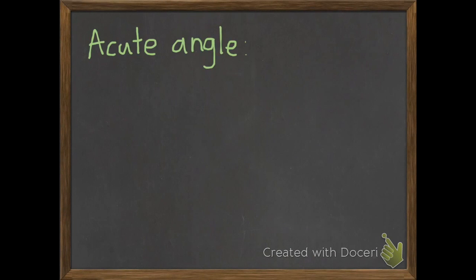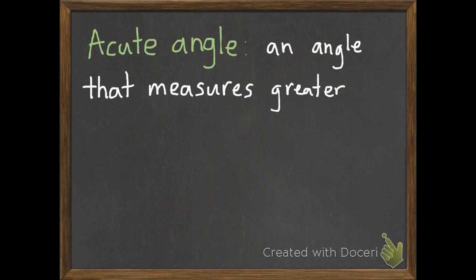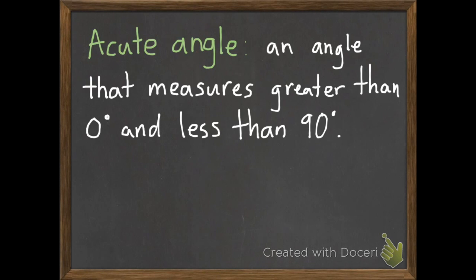Our next vocabulary word is acute angle. So an acute angle is an angle that measures greater than zero degrees and less than 90 degrees. So if we have something right here that would be 90 degrees, it needs to be less than that but it has to be more than zero. So here's one example of an acute angle.